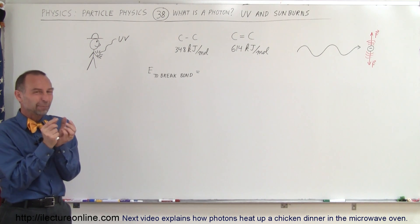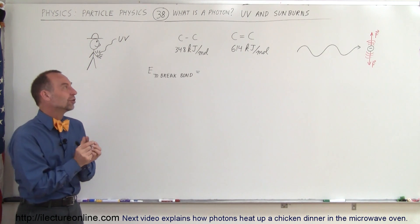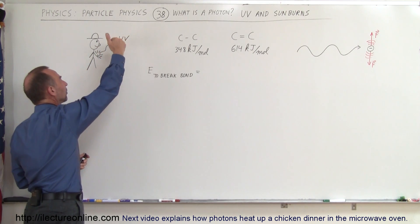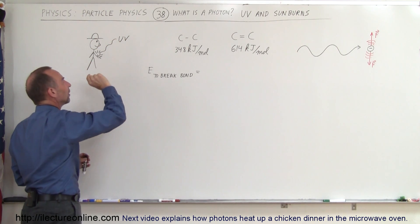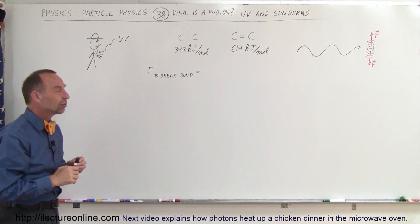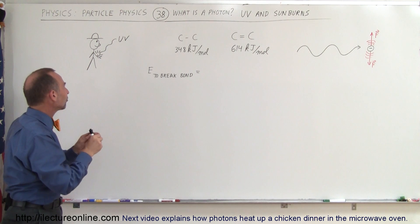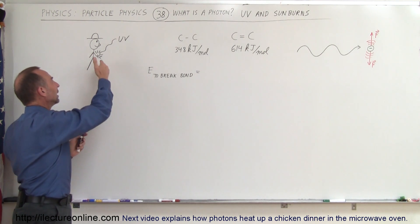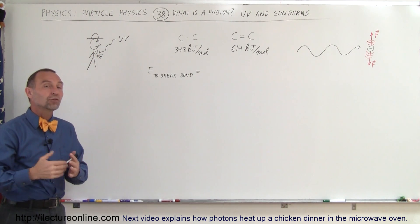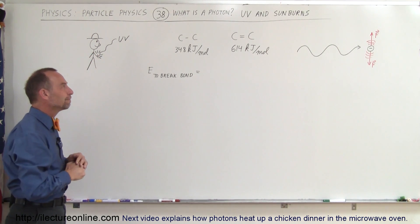Photons are little packages of energy. When sunlight arrives on the earth and comes to the atmosphere, a little bit of the UV radiation comes from the sun, makes it through, and will hit our skin as it's exposed to the sunlight.